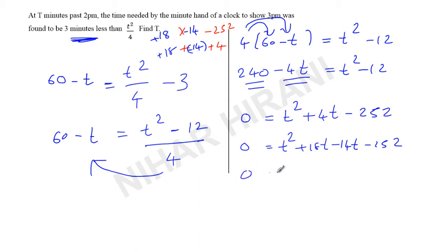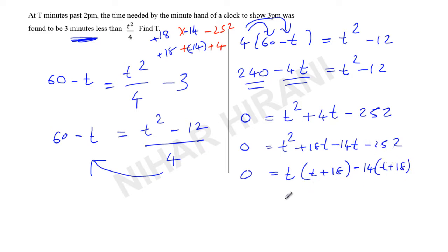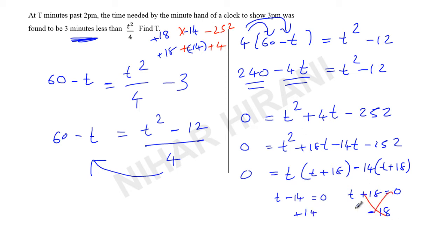0 is equal to — taking t common, we get t(t plus 18). Taking 14 common, we get 14(t plus 18). The sign becomes opposite — since there is minus, this is opposite sign. So t minus 14 equals 0, and t plus 18 equals 0. So one value is minus 18 and the other value is plus 14. Minus 18 is not possible, therefore our answer is 14.